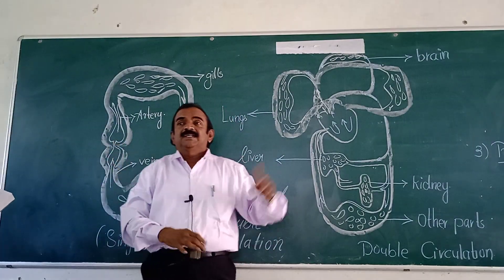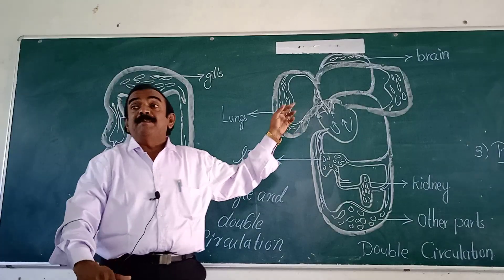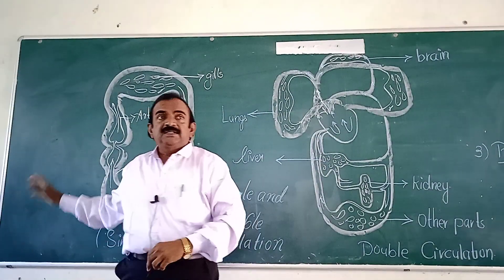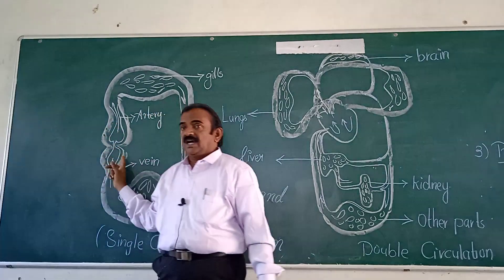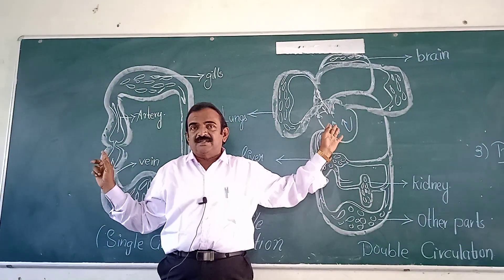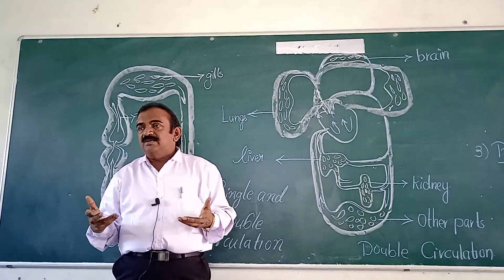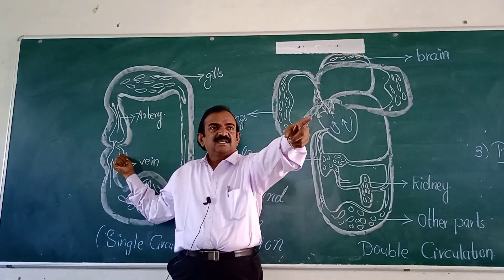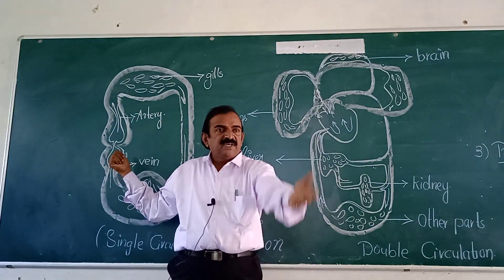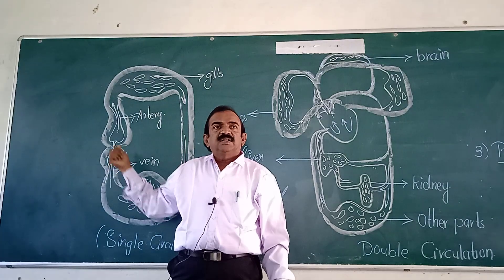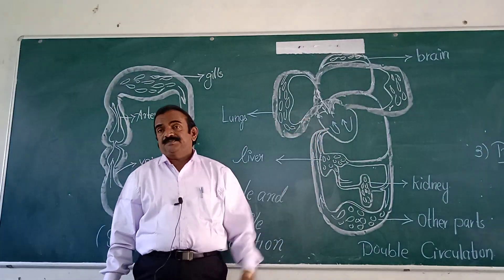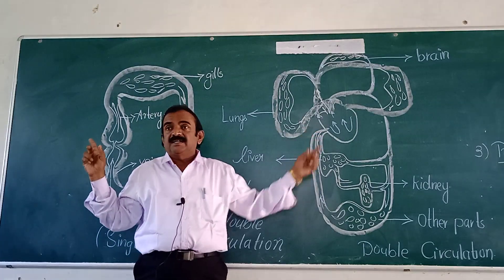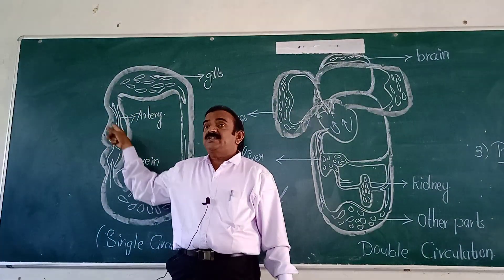This is mammalian heart. This is fish heart. So you are observing there are differences between fish heart and mammalian heart. In case of fish, two chambers are there — only two chambers. But in case of human beings and other mammals, four chambers are there.